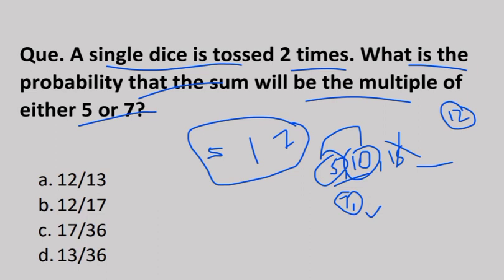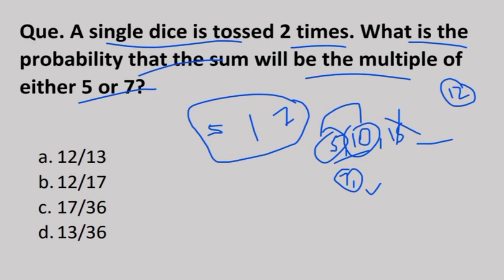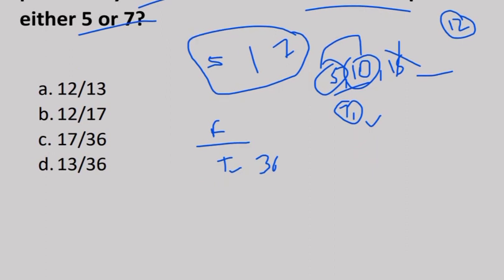Before solving, what is the probability formula? Favorable cases divided by total number of cases. What are the total number of cases? The die is tossed two times, so 6 squared equals 36 total cases. Now coming to favorable cases—the favorable cases are those that fall into these multiples. Let's calculate them.